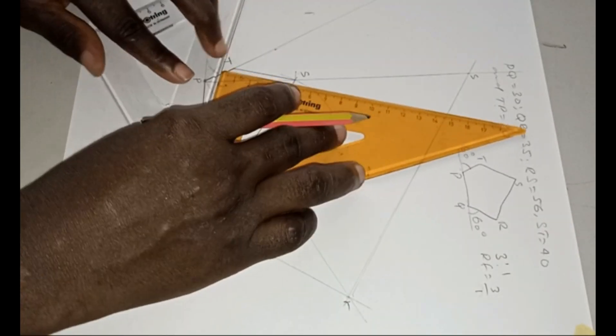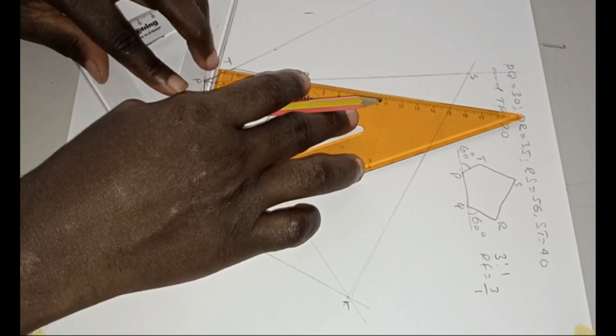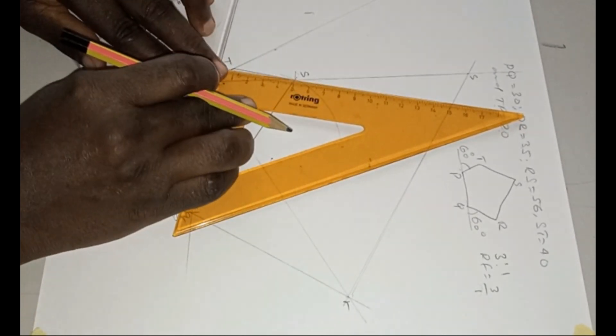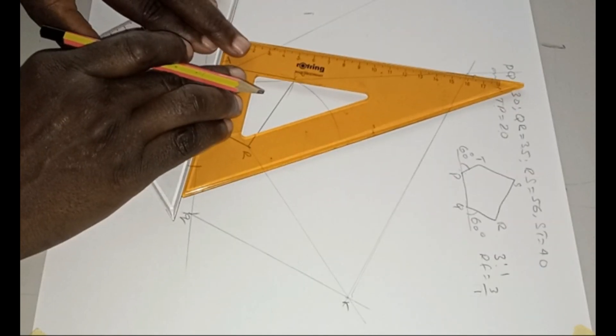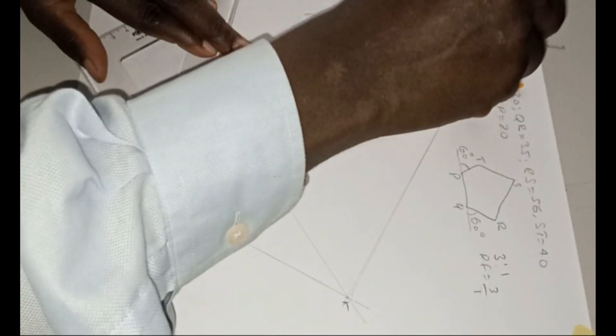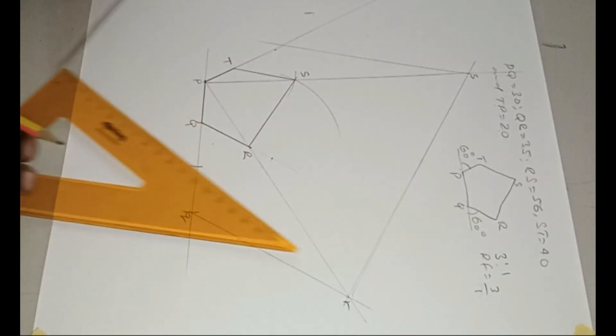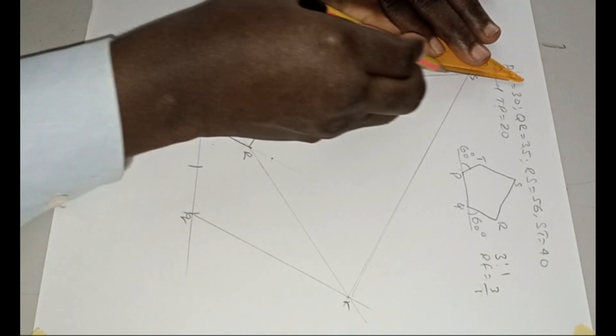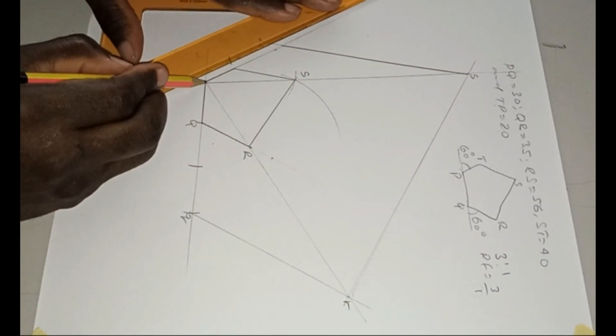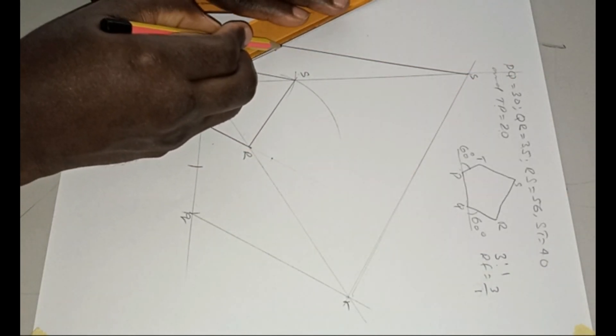You put it like this on ST first. Make sure it is parallel to ST and shift it to that S like this and you draw it that way. So if I now make it thick, that is the enlarged pentagon.